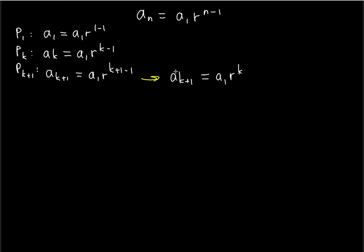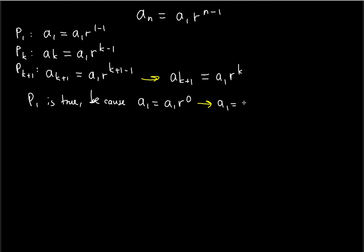The next step is to verify that the P1 statement is true. P1 is true because a_1 equals a_1 times r to the power of 1 minus 1, which is r to the 0. That means the left side a_1 equals the right side a_1 times 1, because r to the zero power is 1, as long as the common ratio is non-zero. So a_1 times 1 is indeed a_1 — P1 is true.